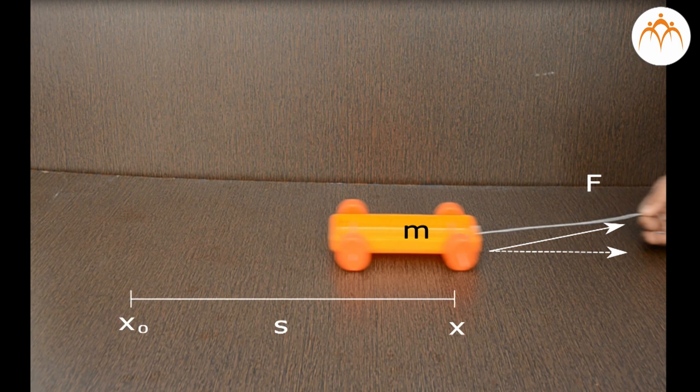a car moves from its initial position at x0 to x, with initial velocity u and final velocity v in the x direction. This results in displacement s.